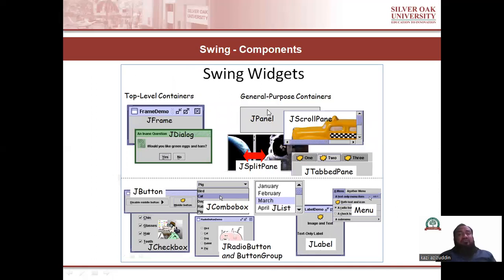Some examples of Swing components are JButton, JComboBox, JLabel, JMenu. In the next lecture, we will discuss how to practically implement these Swing components in Java code. I will demonstrate how to write Java code, how to implement Swing components using Java programming language, and how to create a GUI-based application in Java.